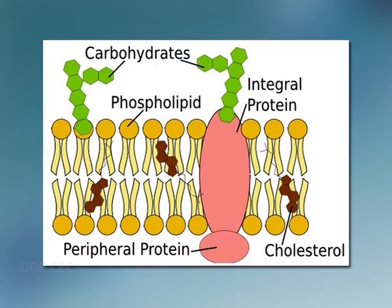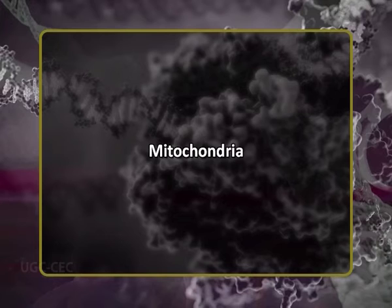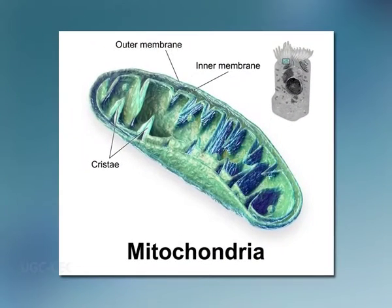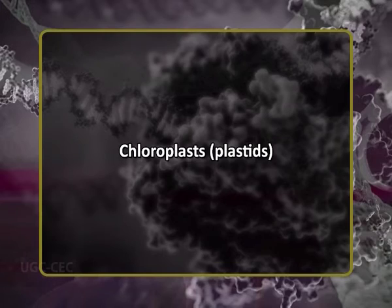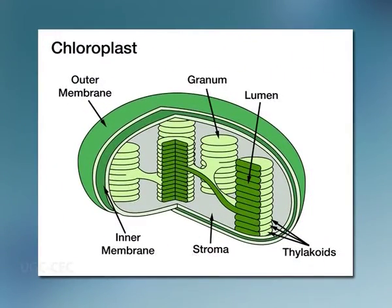Mitochondria are surrounded by a double membrane with a series of folds called cristae and function in energy production through the process of metabolism. They contain their own DNA and are believed to have originated as a captured bacterium.